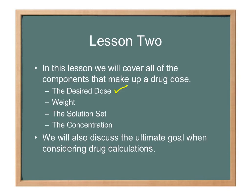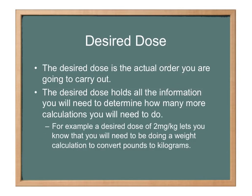We're also going to talk about weight, the solution set, and the concentration. Then we'll discuss what the ultimate goal is when considering drug calculations. The desired dose is the actual order you're going to carry out. It holds all the information you're going to need to determine how many more calculations you have to do. Some desired doses are very simple, and some are a little bit more complex.